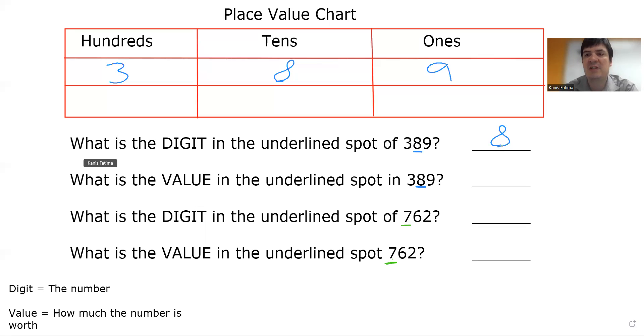The second question is asking, what is the value in the underlined spot in 389? So looking at my place value chart, the 8 is in the tens column. That means the value of the underlined spot is 8 tens or 80.